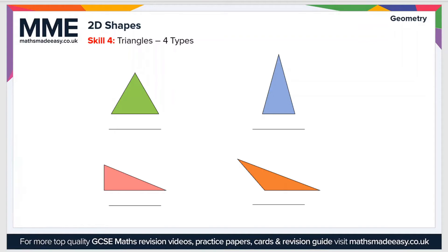The final topic is the four types of triangle. First, we've already seen the equilateral triangle — it's a regular triangle, meaning all the sides are the same length and all of the interior angles are also equal at 60 degrees.